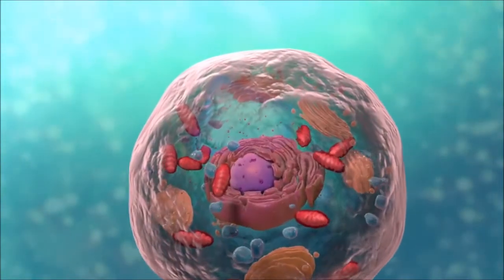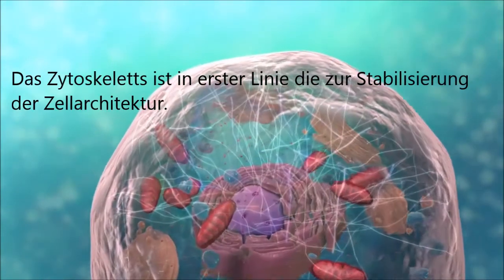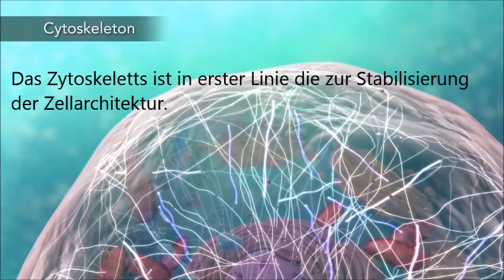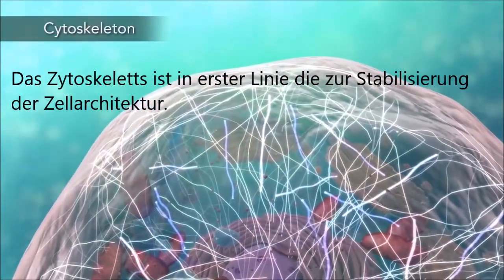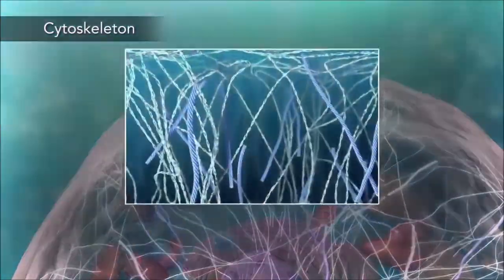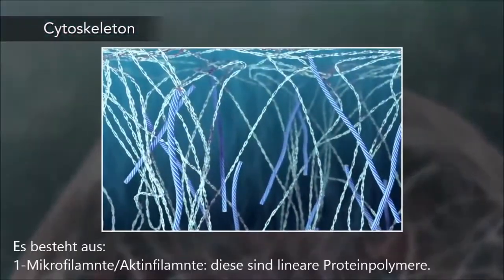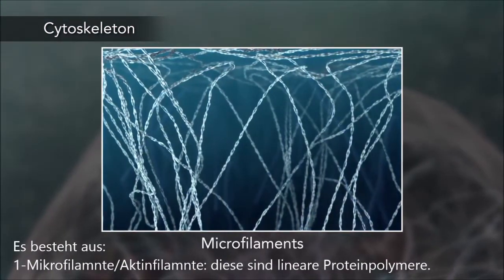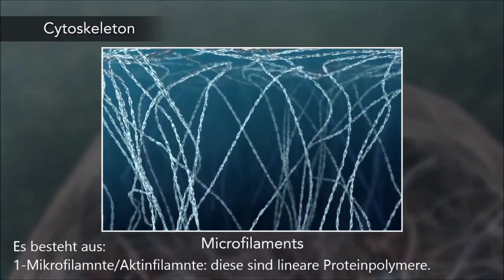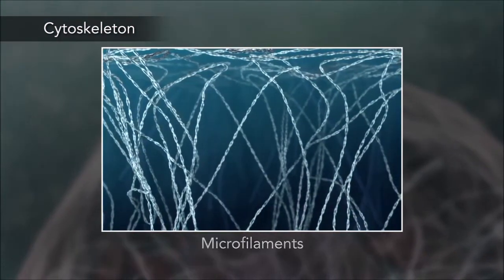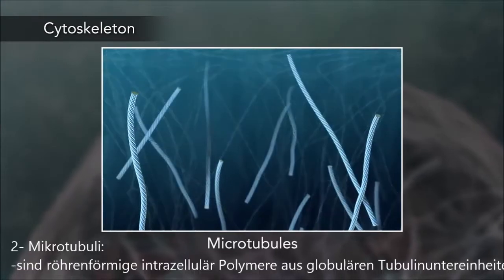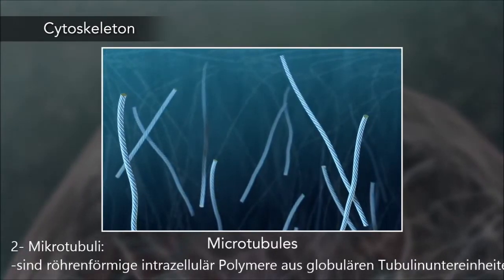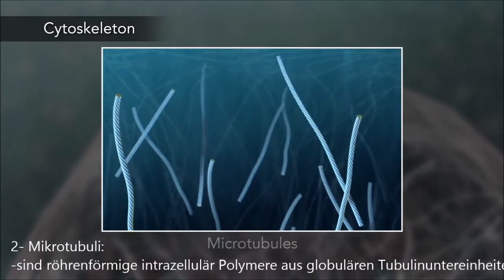Meanwhile, the cell maintains its shape through a cytoskeleton. The cytoskeleton includes the thread-like microfilaments, which are made of protein, and microtubules, which are thin, hollow tubes.